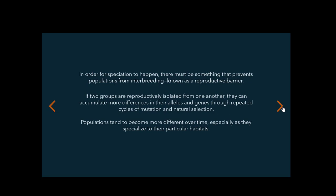If two groups are reproductively isolated from one another, they can accumulate more differences in their alleles and genes through repeated cycles of mutation and natural selection. Populations tend to become more different over time, especially as they specialize to their particular habitats.